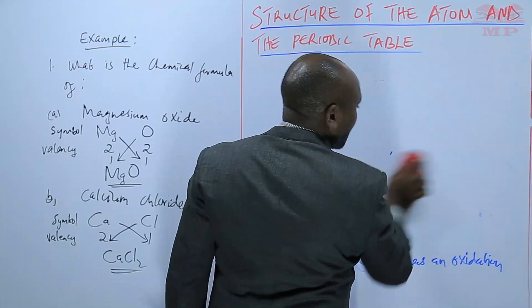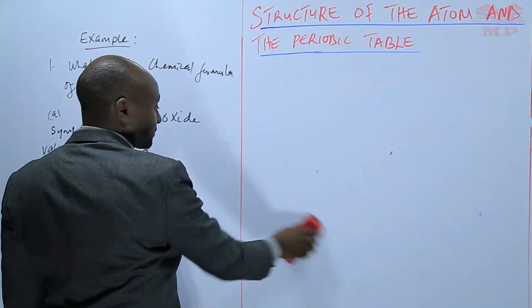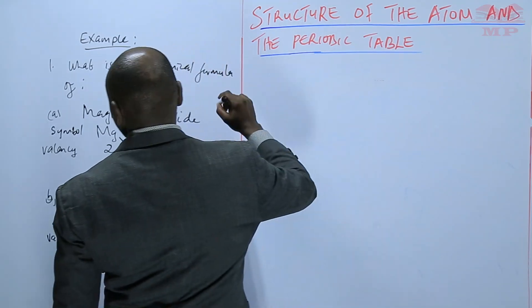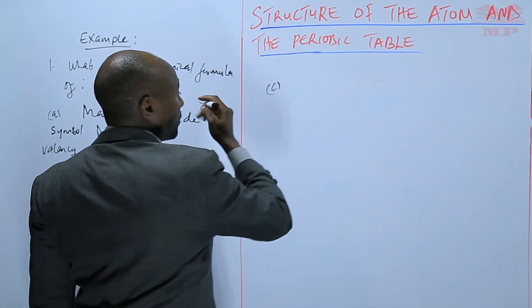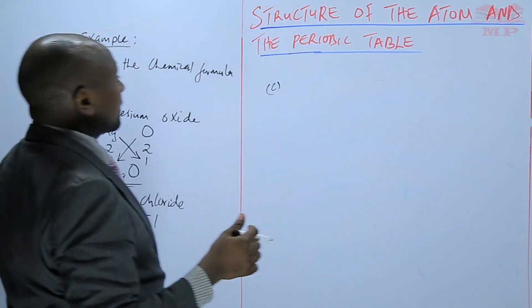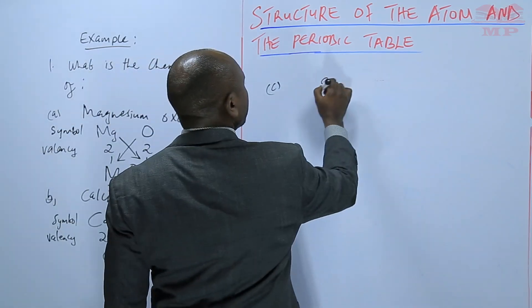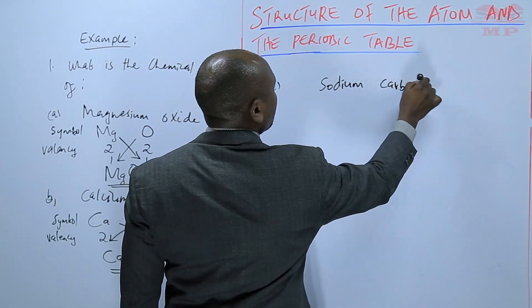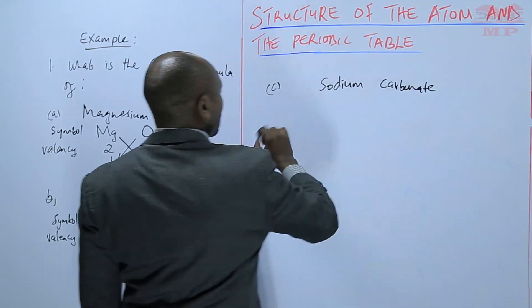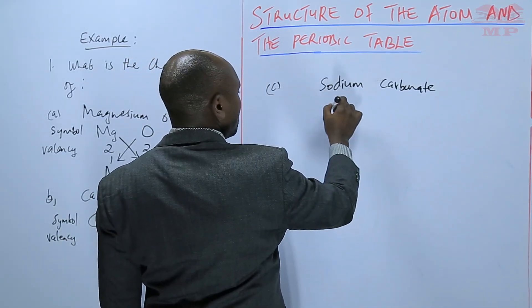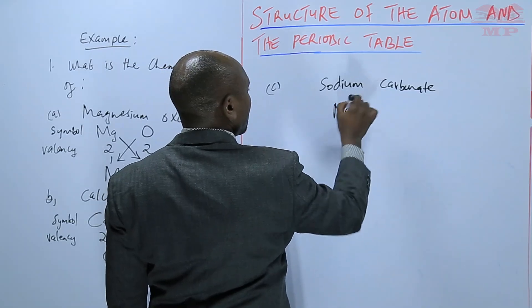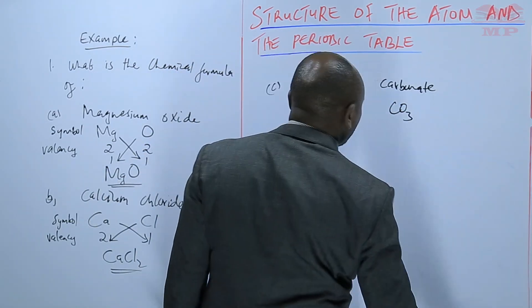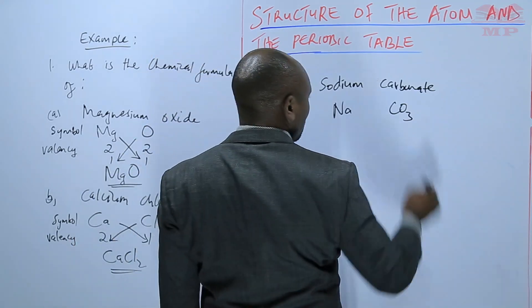We can take a third example, one that is involving a radical. We want to write the formula for sodium carbonate. So sodium, the symbol is Na, carbonate is CO3, of course 2 negative.